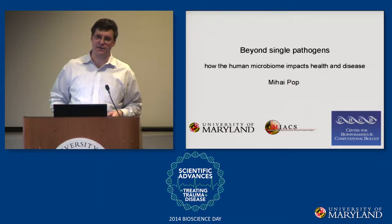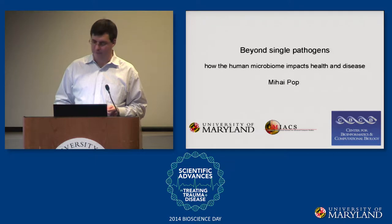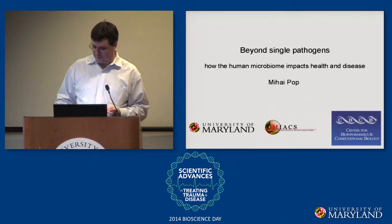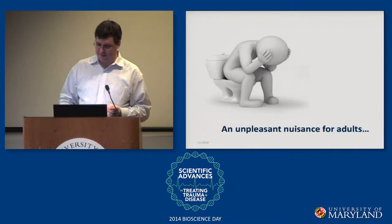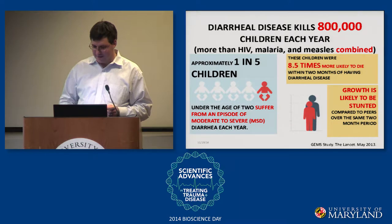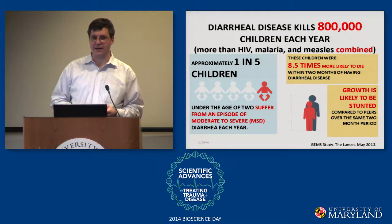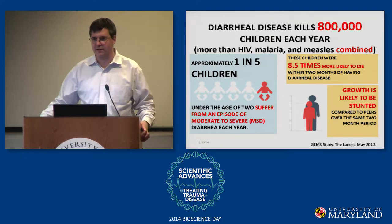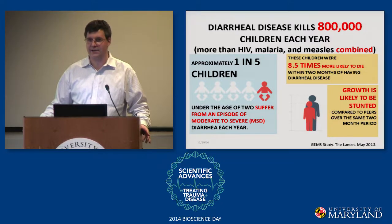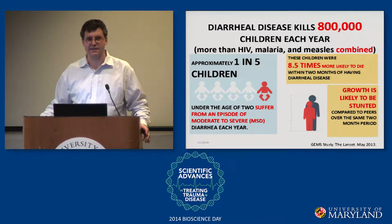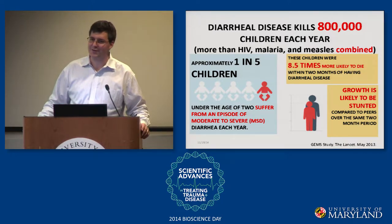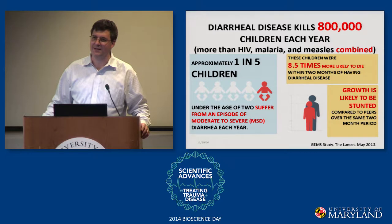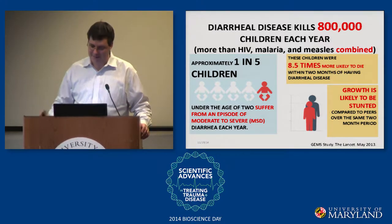What I want to talk to you about today is about the human microbiome, and I have one specific case in mind. This is something that you can call a nuisance in adults, but it actually kills many, many children in the world. This is diarrheal disease — it kills more children than HIV, malaria, and measles combined. It's a very serious disease, and we don't really pay too much attention to it because it doesn't affect us beyond a weekend of inconvenience.